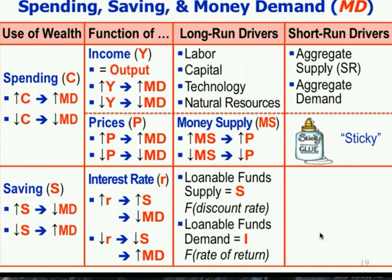What determines the supply of loanable funds — how much are you willing to put into savings? In the long run, the idea is: what's in it for me in terms of what I can consume in the future versus now? That's really about the discount rate — how much is the future worth to you relative to the present? What is really the time value of money? That's going to drive the interest rate in the long run.